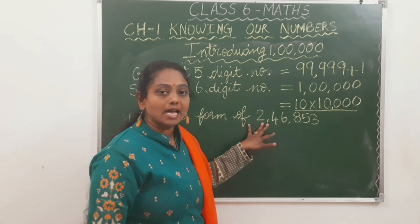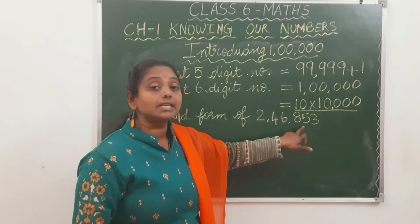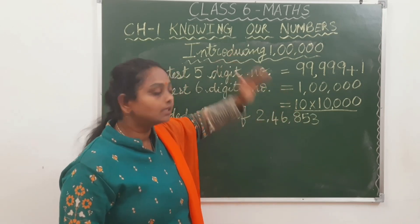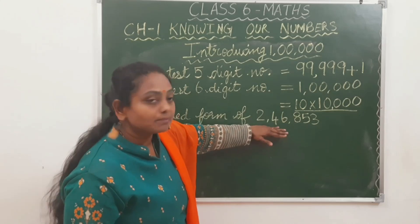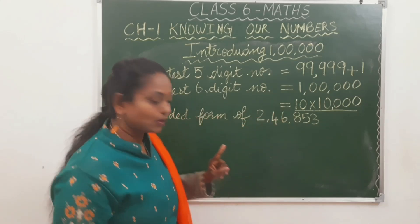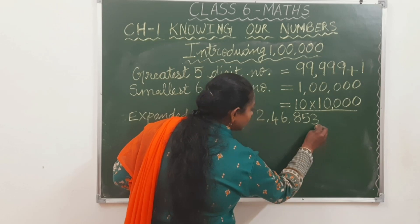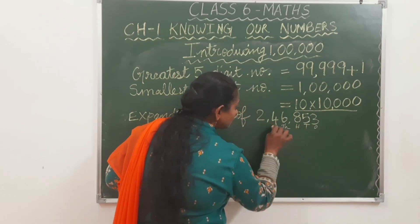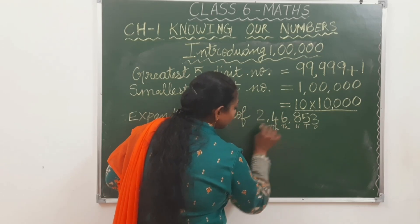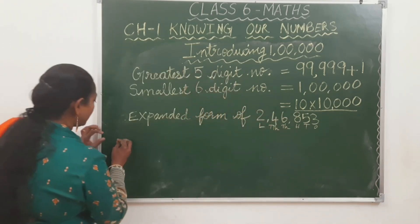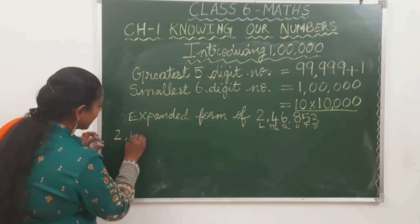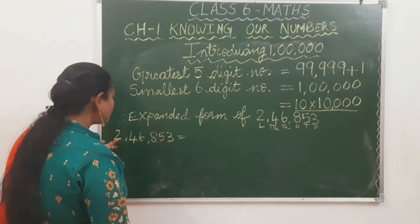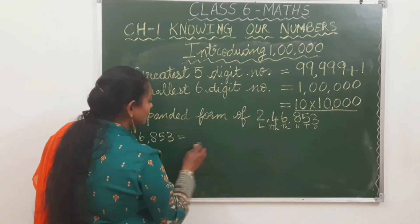Now we'll expand the 6-digit number 2,46,853. We know the place values: ones, tens, hundreds, thousands, ten-thousands, and lakhs. The digit 3 is in ones place. Then tens, hundreds, thousands, ten-thousands, and 2 is in the lakhs place.